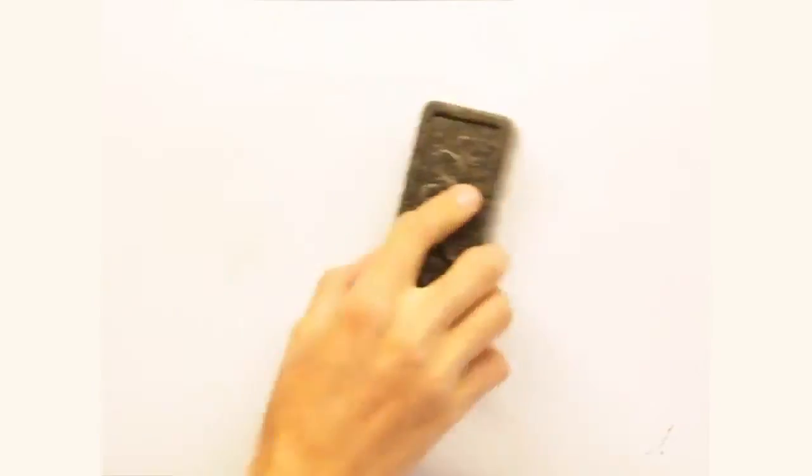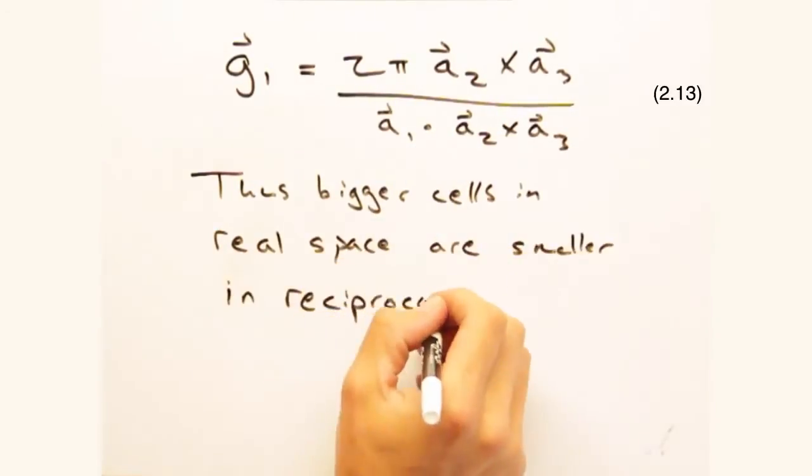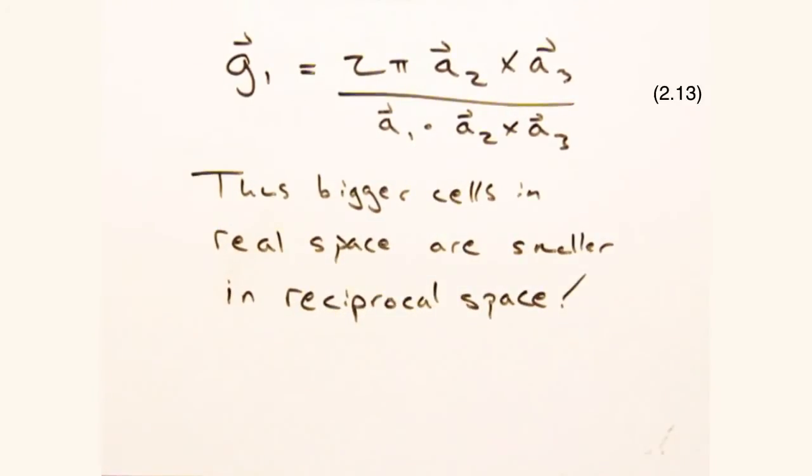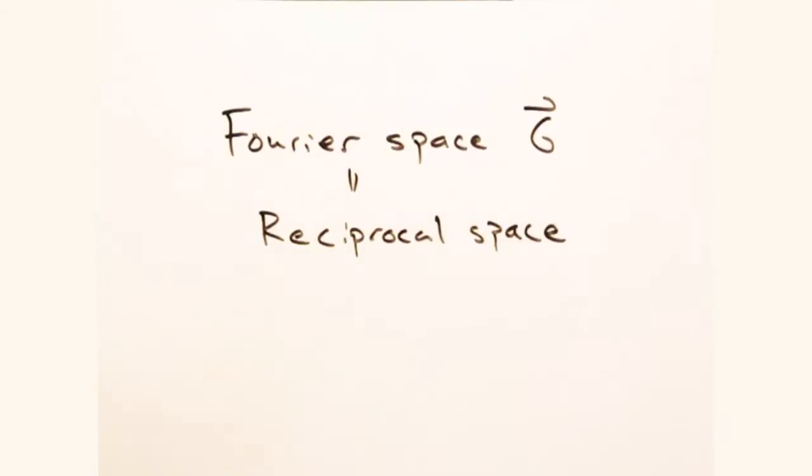Eric mentioned the scale factor went inversely with the cell volume. So a bigger cell in real space is a smaller one in our Fourier space, which is why it's sometimes referred to as reciprocal space. Just a heads up that the two are one and the same.